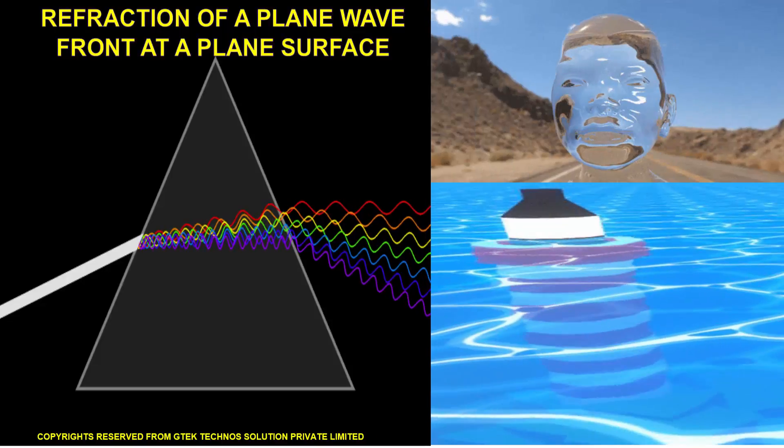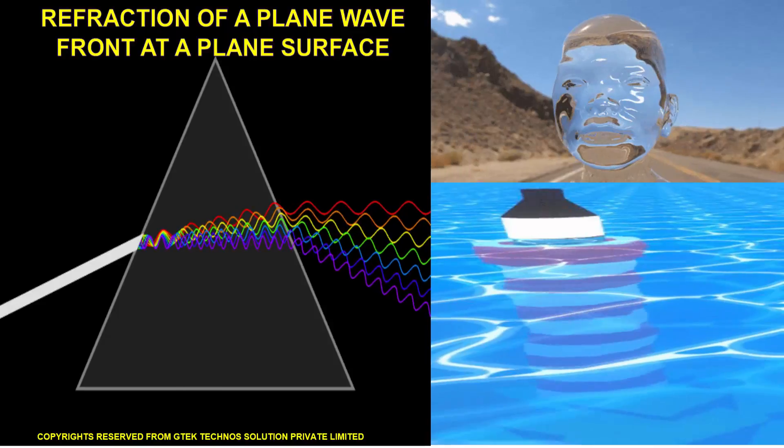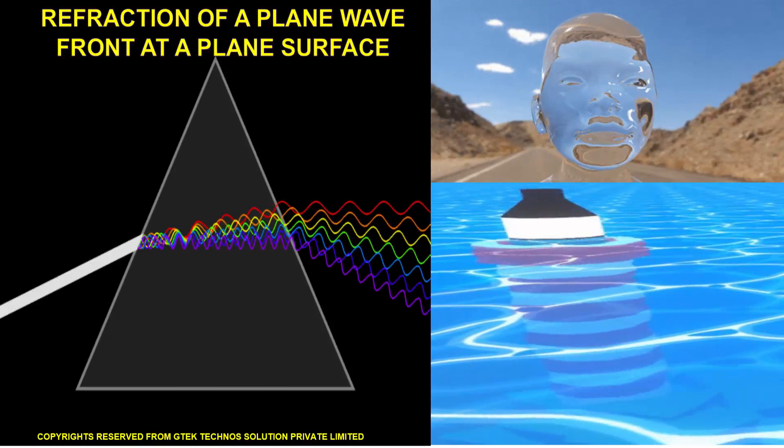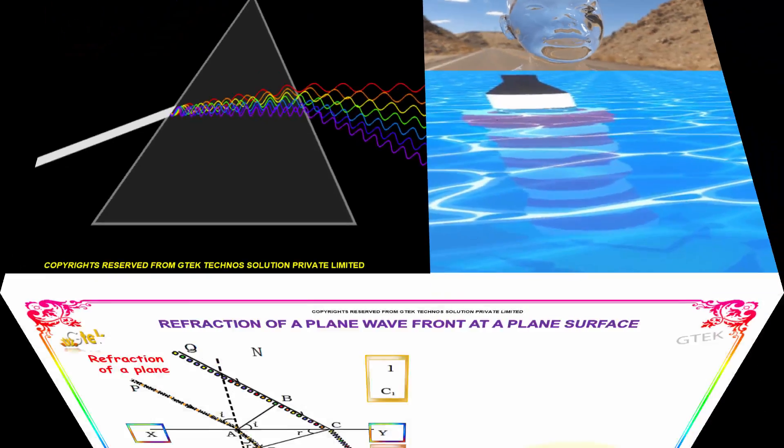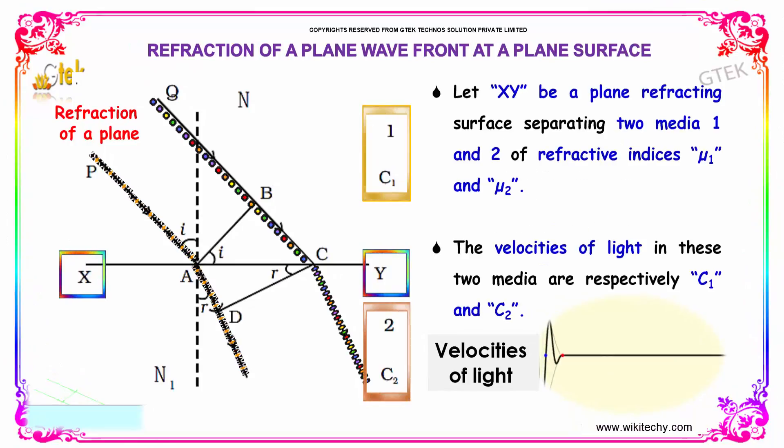Now, let's see the refraction of a plane wave front at a plane surface. This is how the refraction is happening. You are able to see, once the incident ray is passed, the rays are refracted. This is the air medium, this is another medium.